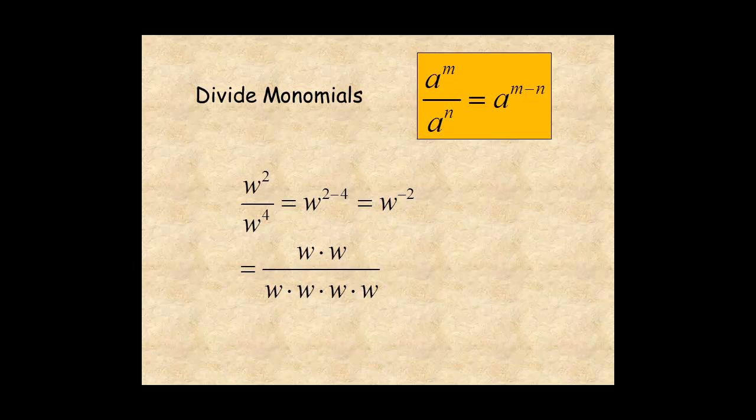Write the expression with two factors of w in the numerator and four factors of w in the denominator. Then, two factors in the numerator cancel with two factors in the denominator, leaving two factors in the denominator, which is 1 over w to the power of 2.